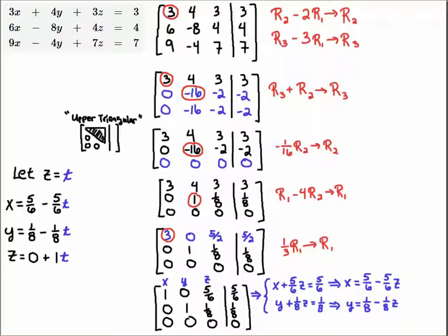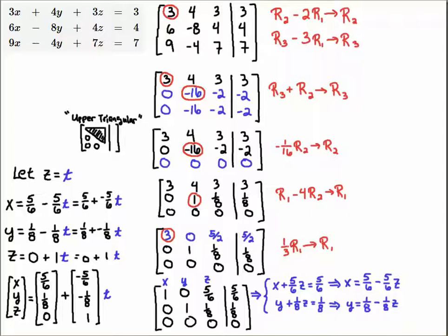So you can start to see how this is lining up, right? I'm going to have a [5/6, 1/8, 0] as one vector, plus a [-5/6, -1/8, 1] vector here that's going to be multiplied by the parameter t.